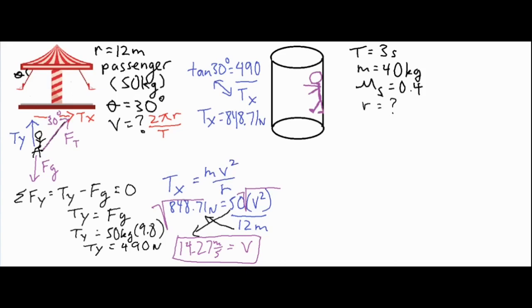Now for the rotor ride problem. As the ride spins and gains velocity, the person sticks to the wall, rises slightly off the ground, and the force of static friction keeps them from sliding down. So static friction points upward, gravity pulls them down, and the normal force from the wall pushes against their back toward the center of the circle.